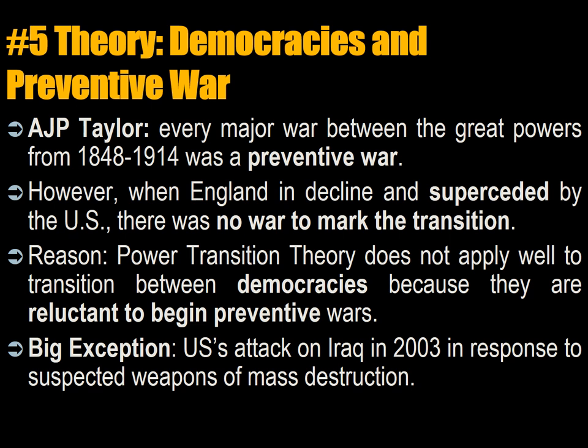There is a fifth theory that comes from A.J.P. Taylor about democracies and preventative war. A.J.P. Taylor found that every major war between the great powers from 1848 to 1914 was a preventative war — in other words, countries go to war because they want to stop another country from getting too powerful and ultimately attacking them. This is the same theory that Copeland developed, probably derived from A.J.P. Taylor, in our discussion about the balance of power.